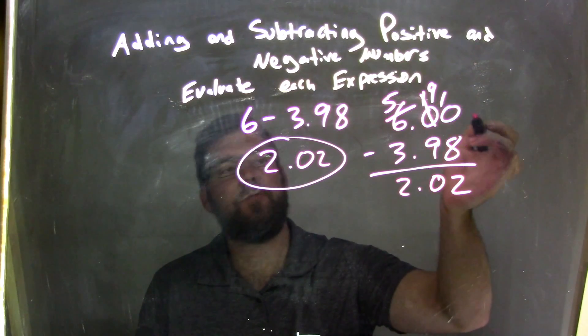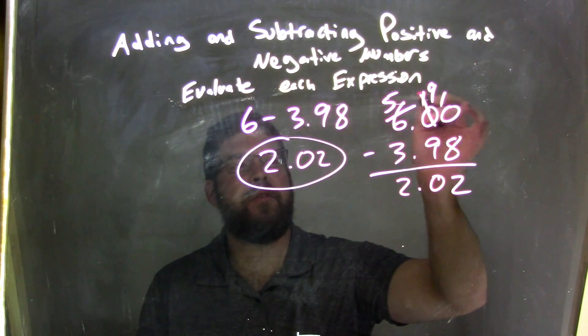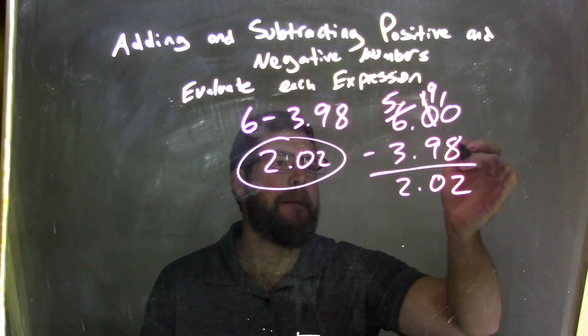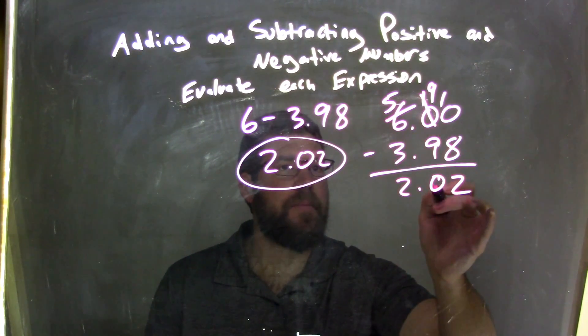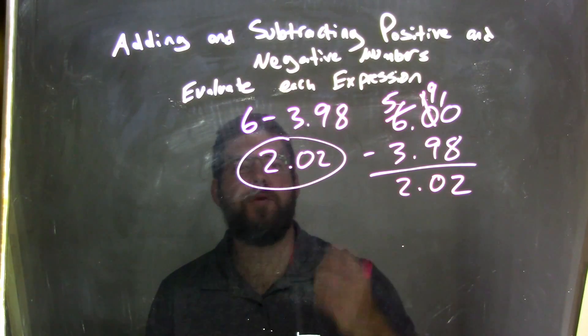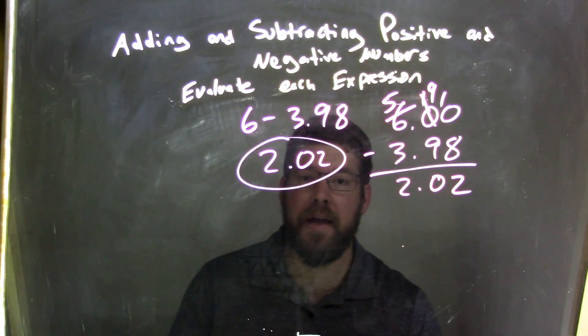For the 0s, I had to borrow from the original 6, make that a 5, eventually make this 0 a 9, and this one a 10. 10 minus 8 is 2, 9 minus 9 is 0, and 5 minus 3 is 2. Make sure the decimal lines up, and we have 2.02 as our final answer.